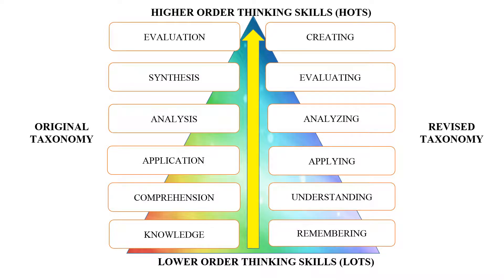This is an example of the original taxonomy and revised taxonomy, from the lower order thinking skills to the higher order thinking skills. The original taxonomy progresses from the level of knowledge, comprehension, application, analysis, and synthesis to the level of evaluation. The revised taxonomy progresses from the level of remembering, understanding, applying, analyzing, and evaluating to the level of creating.